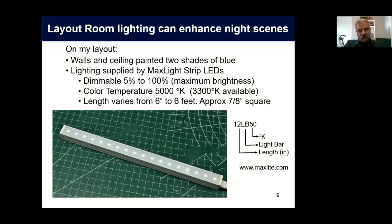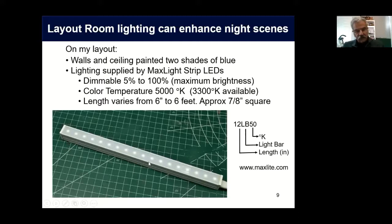I'd like to talk a little bit about how I light my layout room because that enhances nighttime effects. On my layout, the walls and ceiling are painted two shades of blue — a light blue and a lighter blue — to try to give the effects of clouds and variations in the sky. All the lighting on my layout is supplied by MaxLite strip LEDs. I've got this one turned down real low. Basically it's a strip about 7⅛ inch square with a bunch of LEDs in it, and they conveniently supply a diffuser on it, so when you turn the lighting up it gives nice diffuse light.